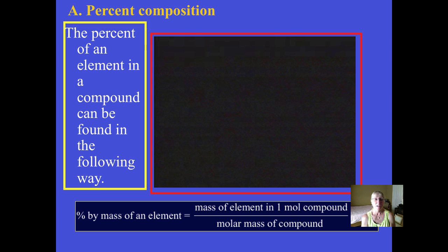As you can see, the percent by mass of an element in a compound is found by taking the mass in grams of that element and dividing it by the total molar mass of the compound.